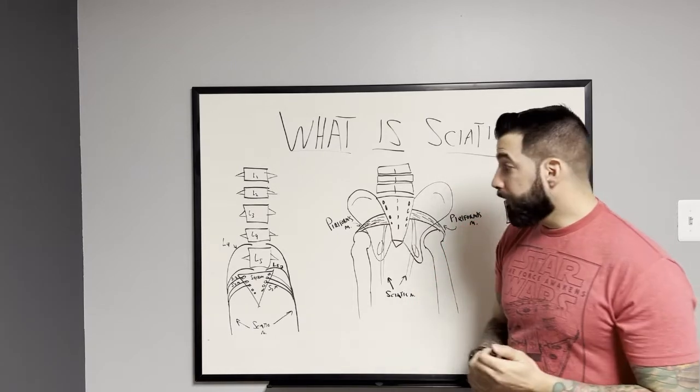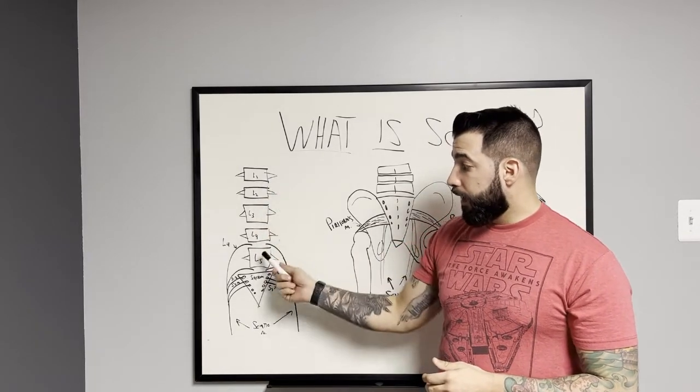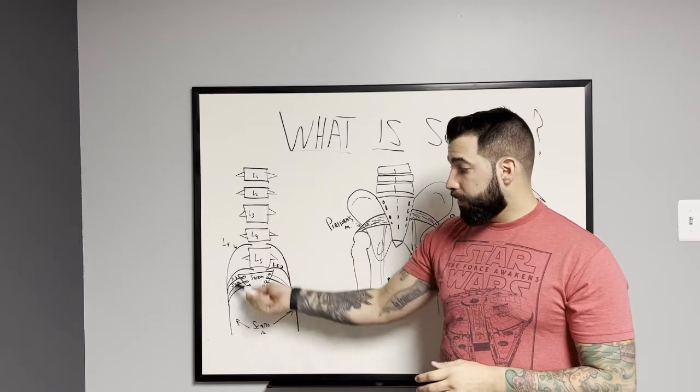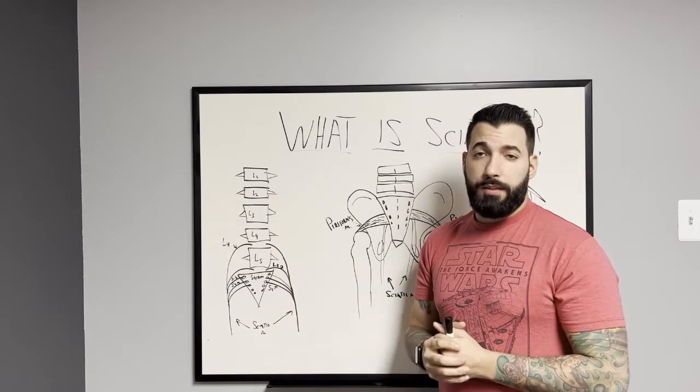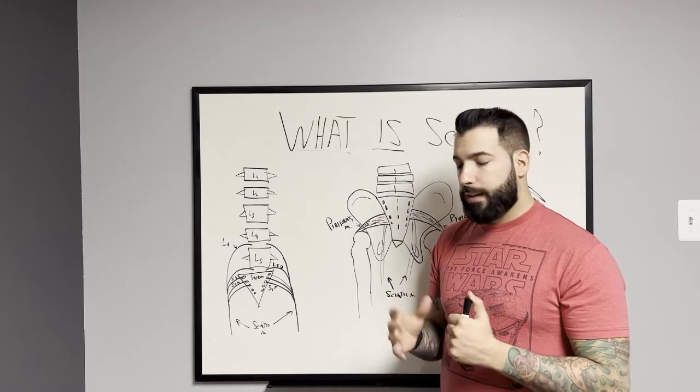So to begin, we have our lumbar vertebra, L1 through five. We have our sacrum, which many consider our tailbone, but not quite correct.